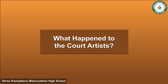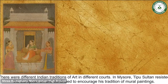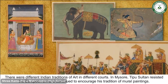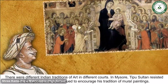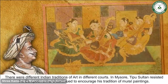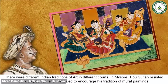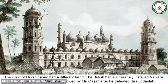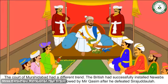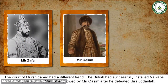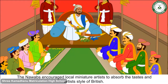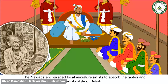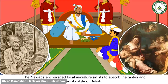There were different Indian traditions of art in different courts. In Mysore, Tipu Sultan resisted European art and continued to encourage his tradition of mural paintings. The court of Murshidabad had a different trend — the British had successfully installed Nawabs on the throne, first Mir Jafar followed by Mir Qasim, and these Nawabs encouraged local miniature artists to absorb the tastes and style of the British.